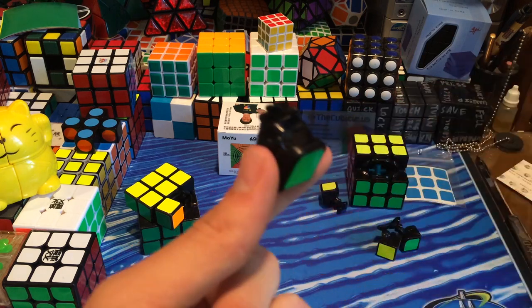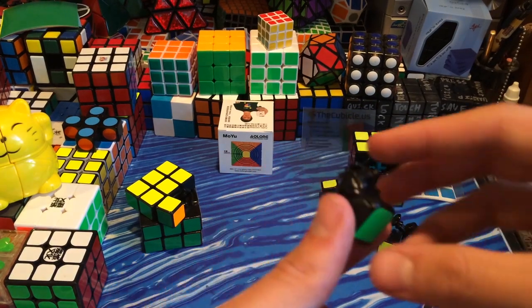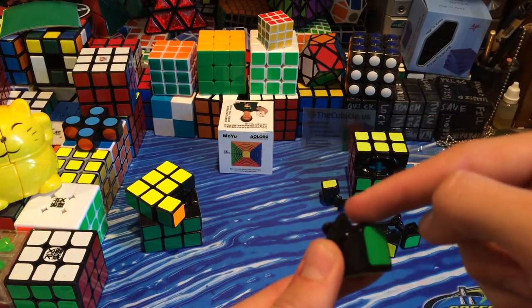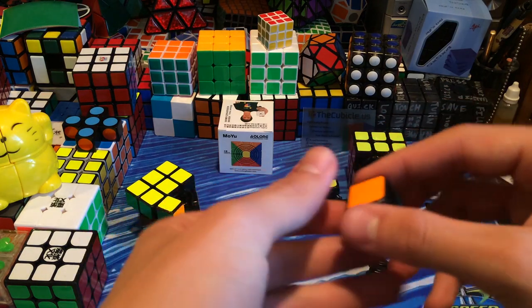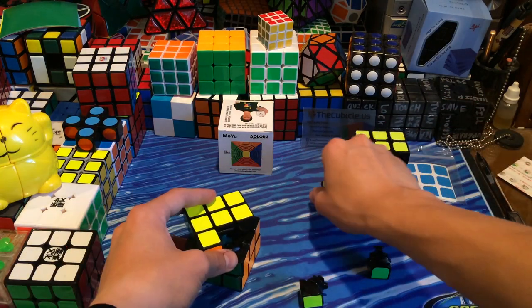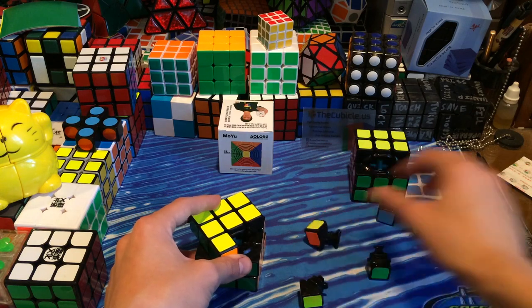So also I'm not quite sure if you can see because of the lighting on black puzzles. But the edge right here is a lot more rounded on the Aolong than it is on the Weilong. Which might make it a little bit smoother and probably have less of a chance to actually lock up.